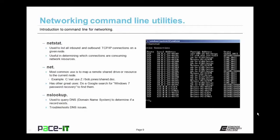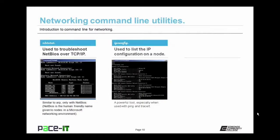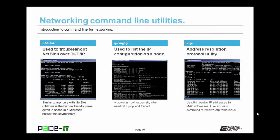NSLOOKUP is used to query DNS to determine if a record exists — very useful in troubleshooting DNS issues. NBTSTAT is used to troubleshoot NetBIOS over TCP/IP; it's very similar in function to ARP only with NetBIOS — NetBIOS is the human-friendly name given to nodes. IPconfig is very useful when troubleshooting networking issues — it lists the IP configuration for a given node and is used in conjunction with ping and tracert to determine if there is an IP address conflict. ARP (Address Resolution Protocol) is used to resolve IP addresses to MAC addresses — that's how a switch knows where to deliver a packet. Use ARP at the command line to resolve ARP table problems.